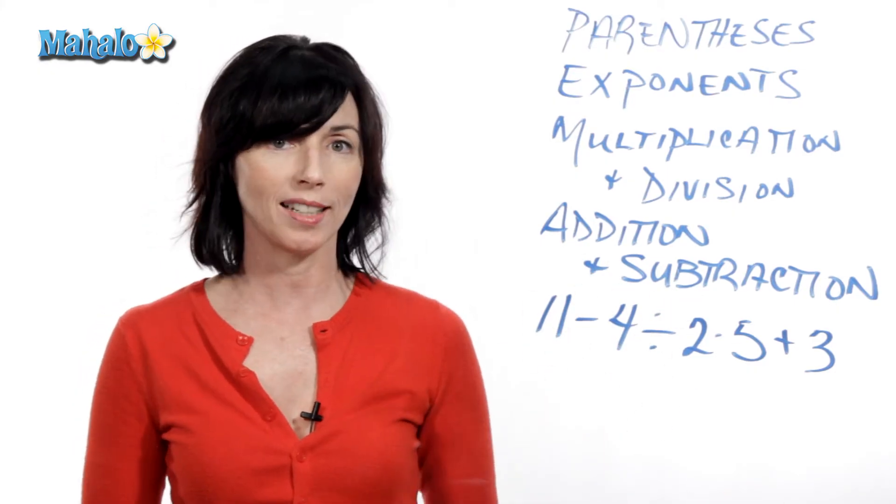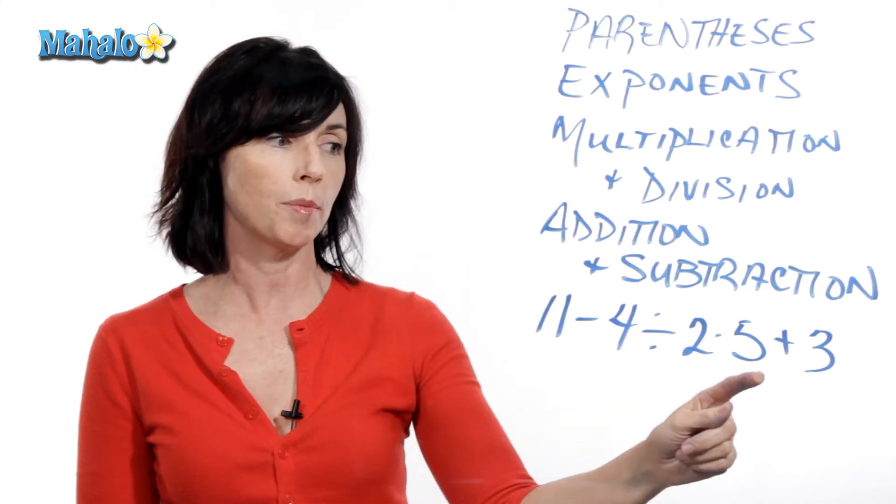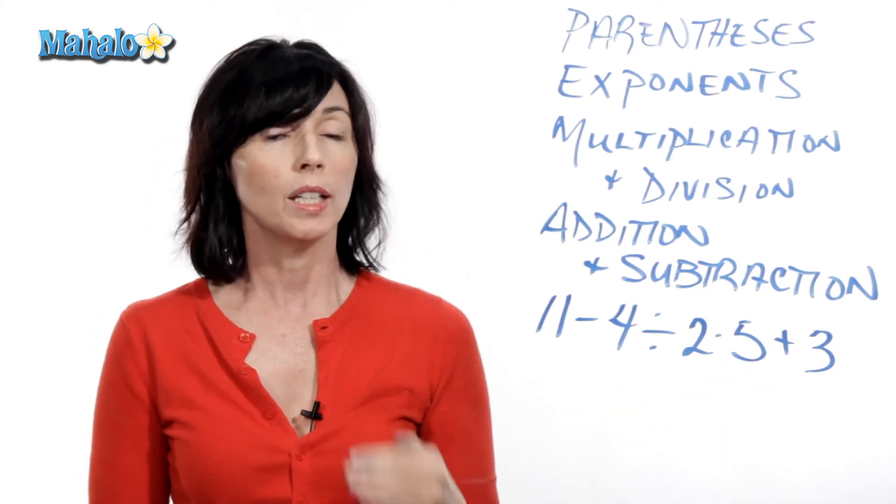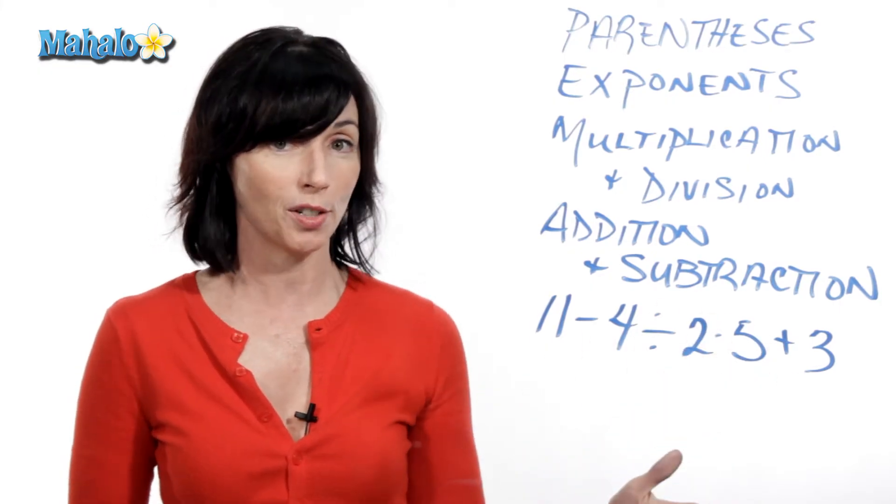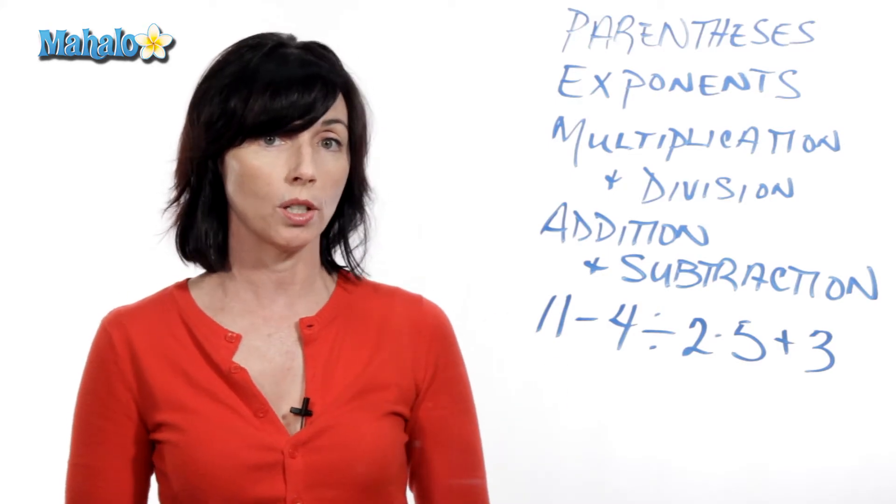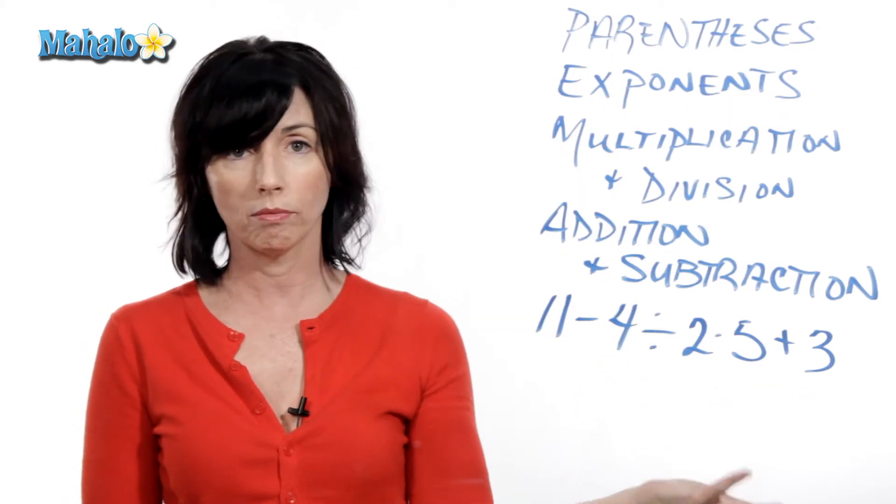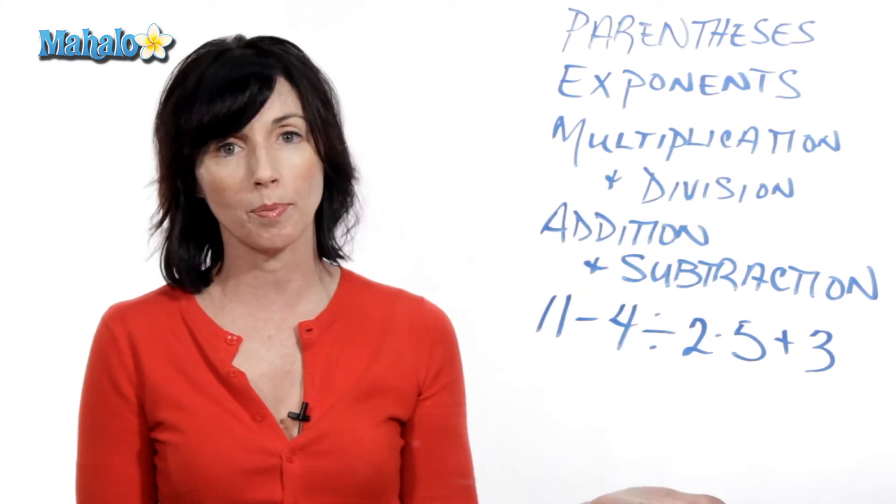So let's take a look at an example. Let's say we have 11 minus 4 divided by 2 times 5 plus 3. Now, if you don't use order of operations, you might get a completely different answer here. That's why it's so important. So the first thing we're going to do is look and see, do we have anything in parentheses? No. Do we have any exponents? No.